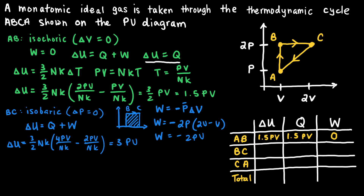Jumping back to the chart: the change in internal energy of the gas is 3PV and the work done is −2PV. Using the first law delta U = Q + W, the heat that needs to be added to the gas during process BC to make the equation work is 5PV, because 5PV − 2PV = 3PV.